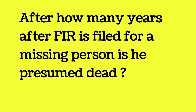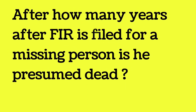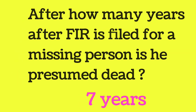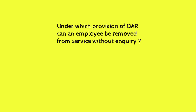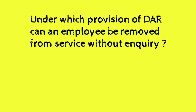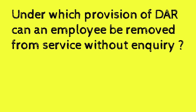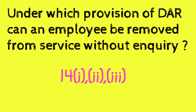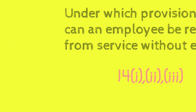After how many years after an FIR is filed for a missing person is he presumed dead? The answer is 7 years — up to 7 years, the railway considers that he may return; after that he is presumed dead.